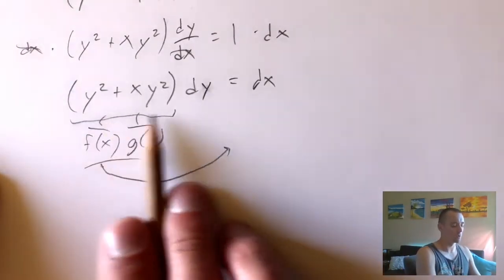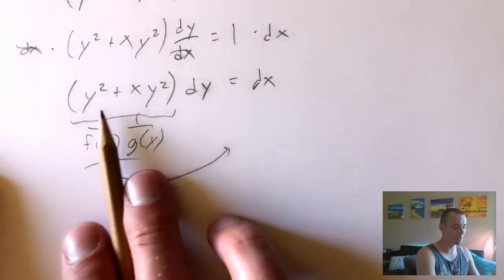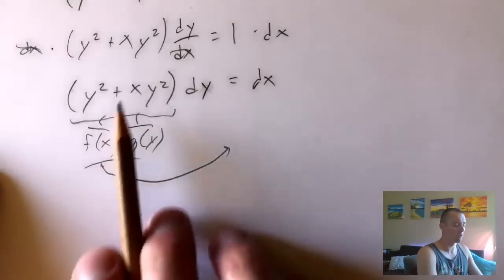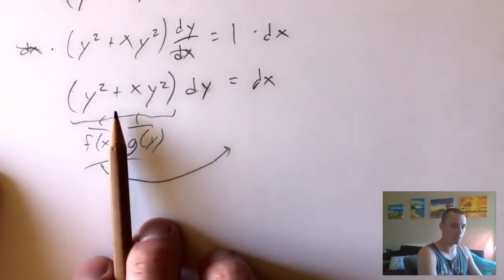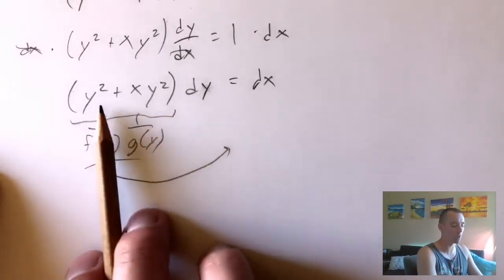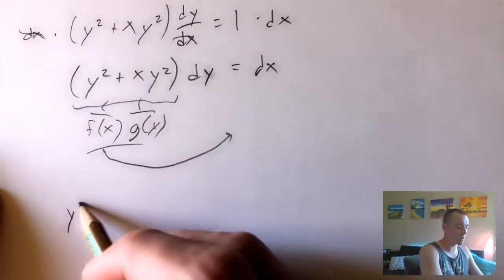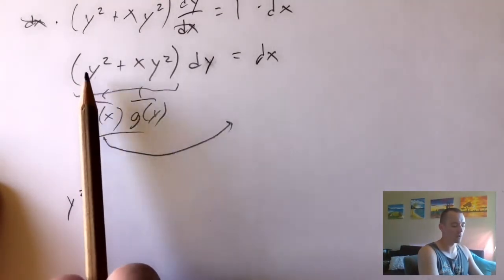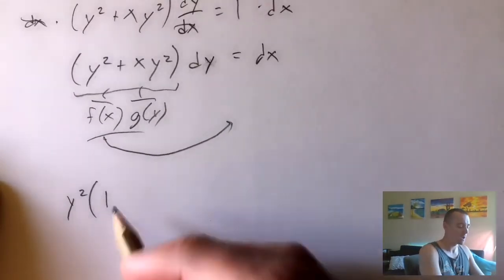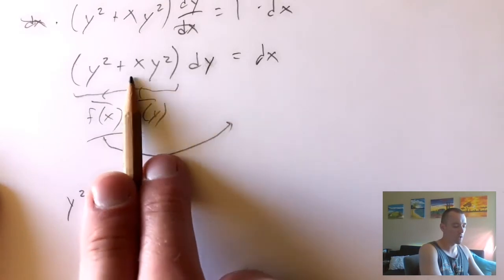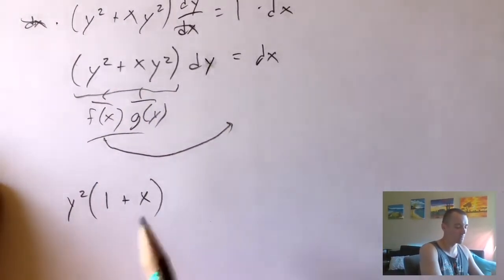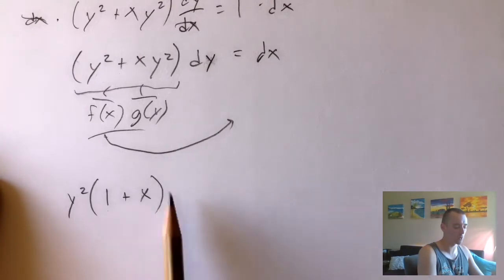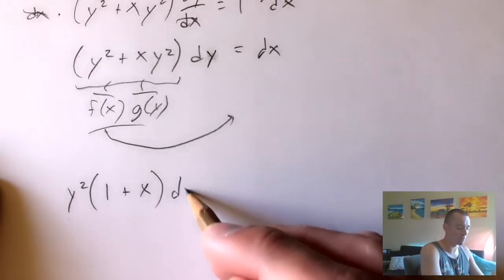Notice both terms here have a y squared, so what we can actually do is factor out y squared from the left side of our equation. When we factor out y squared from the first term, y squared divided by y squared leaves us with one. When we divide out the y squared from the second term, xy squared divided by y squared is just x. So when we factor the y squared out, we're left with one plus x, all in parentheses, times y squared, and then we still have our dy here and our dx on the right.